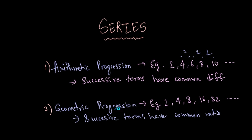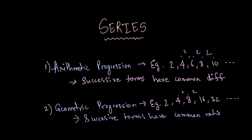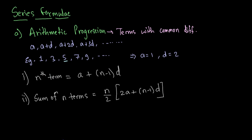In the case of geometric progression, take any two successive terms and divide them — you get a ratio. So they have a common ratio. In this case the ratio is 2. Let's take 8 and 16, the successive terms — again the ratio is 2. So in a geometric progression successive terms have a common ratio, and in an arithmetic progression successive terms have a common difference.